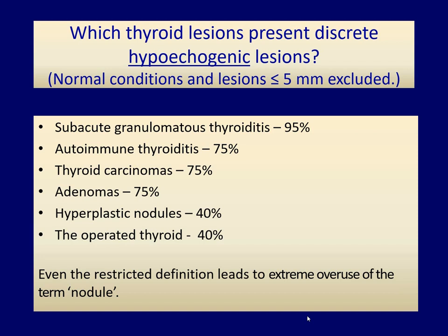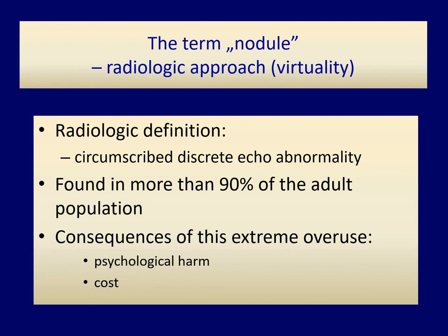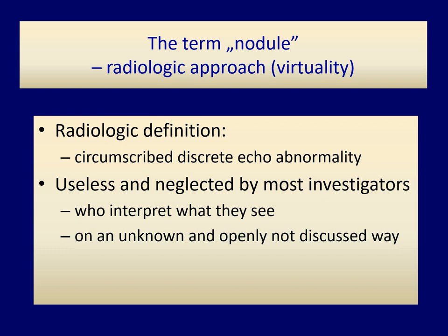The overwhelming majority of thyroiditis cases are still listed among thyroid nodules. To summarize: if we literally interpret the single available definition on thyroid nodule, then virtually every adult has a nodular goiter. This extreme exaggeration would have obvious detrimental consequences both for the person under investigation and for the healthcare system as a whole. The only reliable definition on thyroid nodule is practically useless, and most investigators simply ignore it. The resulting conclusion is self-evident: most investigators, when they see a discrete lesion, interpret and call some of them nodules and some not. The problem is that this interpretation is hardly uniform, and there is no discussion of it in the literature, so there can be no consensus.